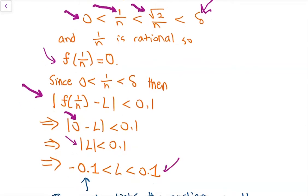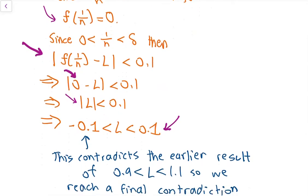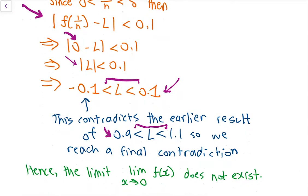We have −0.1 < L < 0.1. However, this is a problem because earlier we showed L must be between 0.9 and 1.1, so here L is close to 0 but there L is close to 1. We get two pieces of contradictory information. This leads to a final contradiction, so such a value of L cannot exist, and the limit of f(x) as x approaches 0 does not exist.